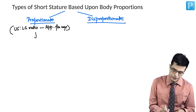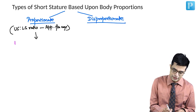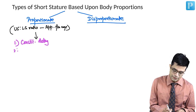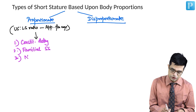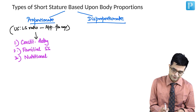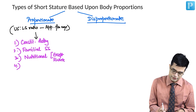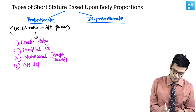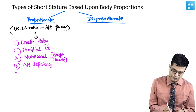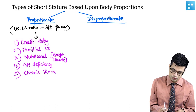The common causes of proportionate short stature include constitutional delay in growth and hormone deficiency — all physiological short stature cases are proportionate. It also includes nutritional causes like malnutrition, except rickets, which does not cause proportionate short stature. Fourth, growth hormone deficiency causes proportionate short stature, and fifth, children with chronic illness are also found to have proportionate short stature.